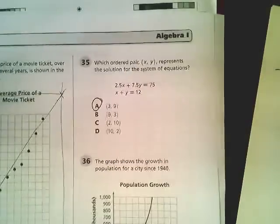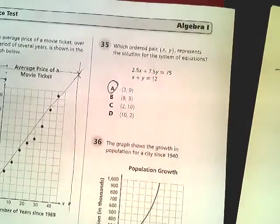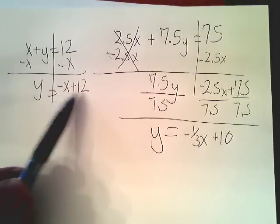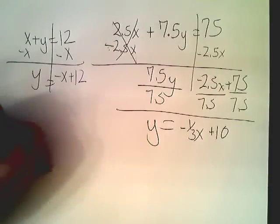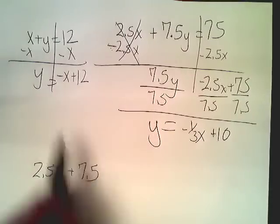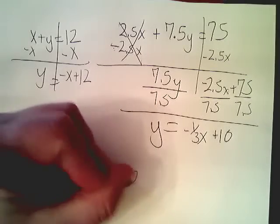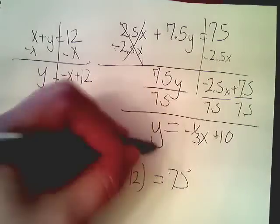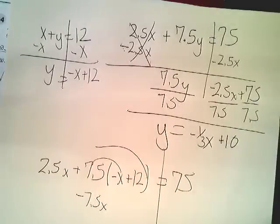I could also, if I don't like that method, use two or three other methods. You can use substitution, which is where I transferred this y equals negative x plus 12. I could plug it back into this equation in this form. But instead of doing 7.5y, I put this in place of y because I've just shown that they're of the same value. And then it's basically like solving an equation at this point. Do the distributive property.